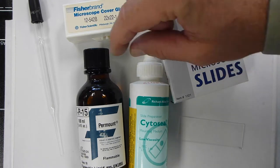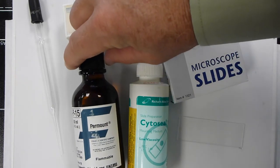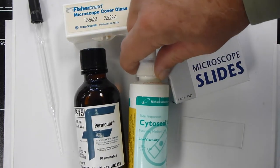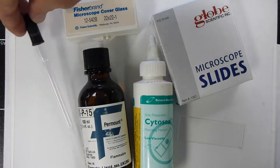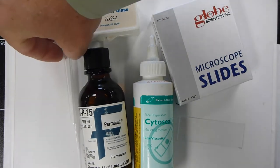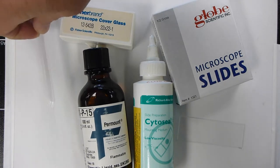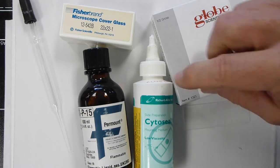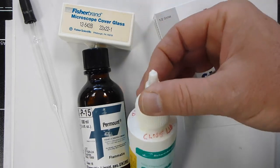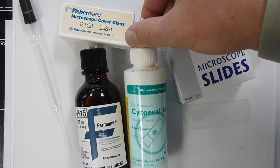And you'll need some mounting medium. We either use perm-out in the lab or we use material called cytosol. If you use perm-out, you'll need to use an eyedropper that will be disposed of immediately upon use in the sharps jar. If you use the cytosol, there's a little spigot on the top, which is a little bit cleaner.